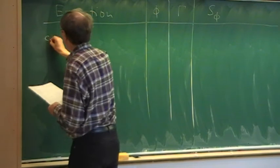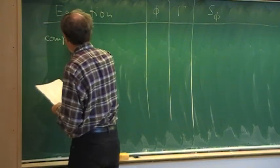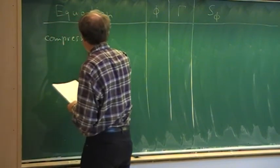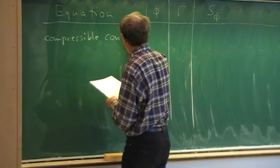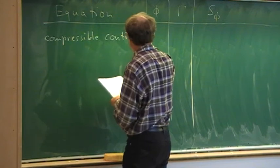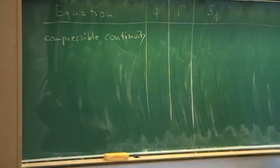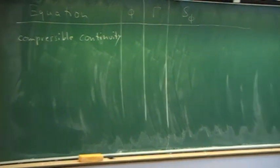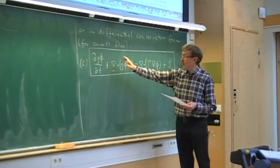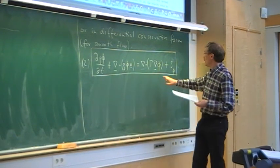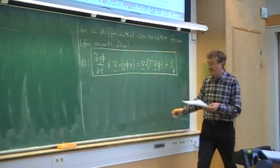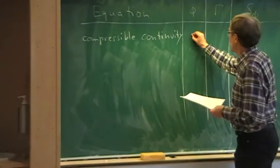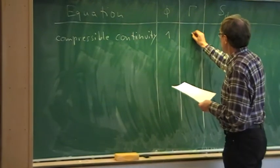Starting with the compressible continuity equation: phi equals 1, so we have d-rho/dt plus the divergence of rho*u. Here gamma equals 0 and the source term equals 0.